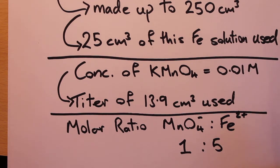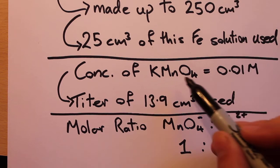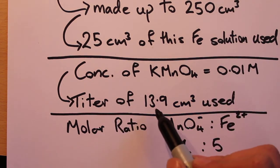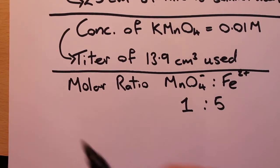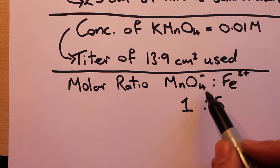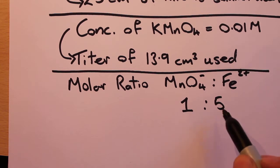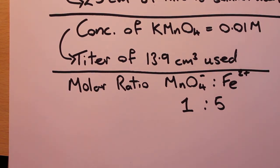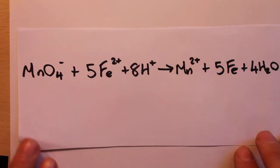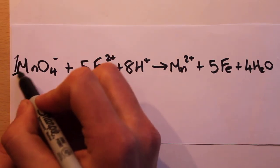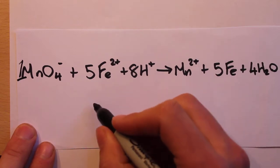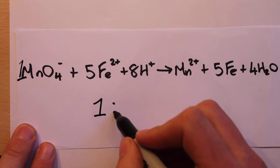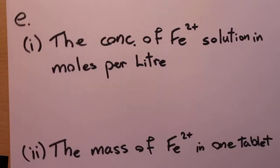We're also told that the concentration of our KMnO4 is equal to 0.01 molar — moles per liter. Of this KMnO4, a titer of 13.9 cm³ was used in the experiment. Finally, the molar ratio of MnO4⁻ to Fe²⁺ is 1:5, which comes from the equation — one MnO4⁻ and five Fe²⁺, so for every one mole of MnO4⁻ we have five moles of iron.